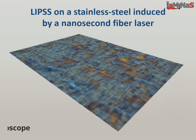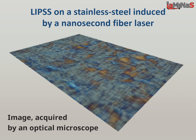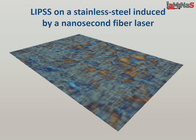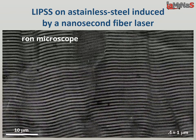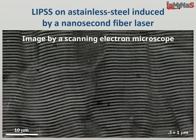This is an image of the surface acquired by an optical microscope, while this is an image of ripples induced by nanosecond laser pulses, acquired by scanning electron microscope.